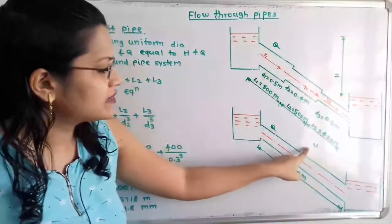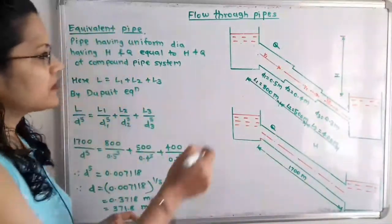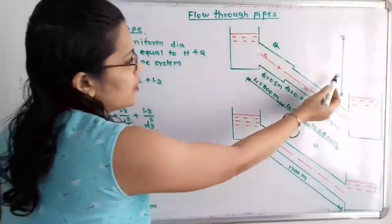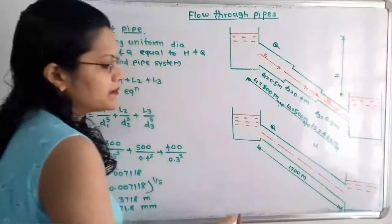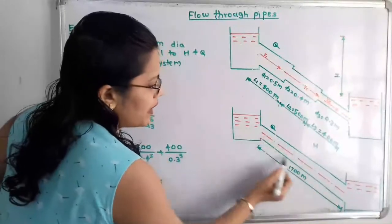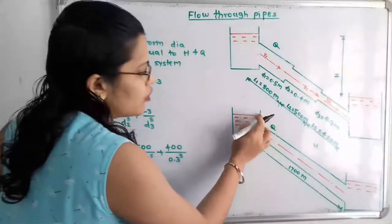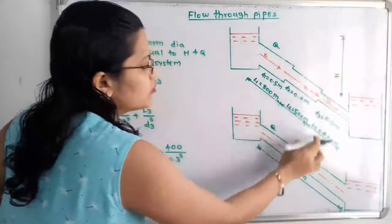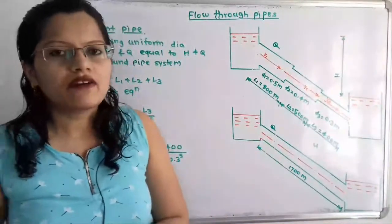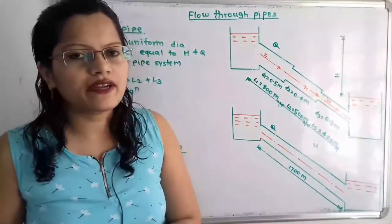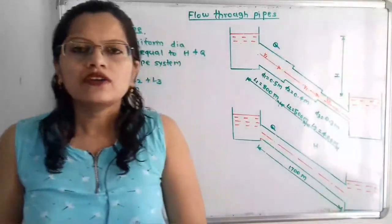The discharge through this equivalent pipe is the same, and the loss of head h also remains the same for this equivalent pipe. So if we observe, suppose the discharge is Q and loss of head is H, then for this equivalent pipe system it has uniform diameter, the same discharge Q, and the loss of head is also equal to H. In this video we are going to find out the diameter of this equivalent pipe.